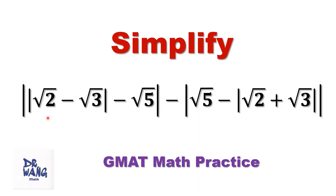This kind of problem is not difficult, but it's easy to make a mistake, especially when you have negative, negative, negative here. How to get rid of the absolute value sign?